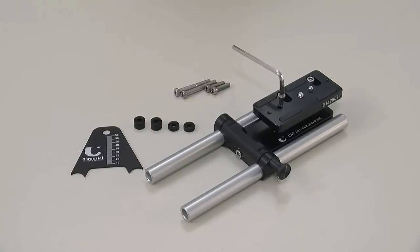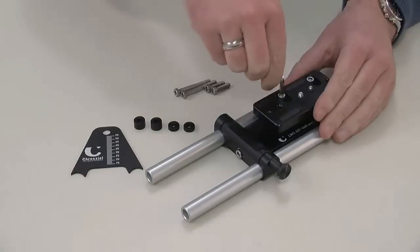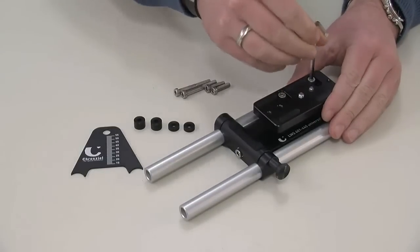All universal lightweight supports come with 16mm spacers pre-assembled because this combination already fits many camcorders.